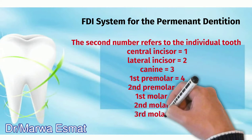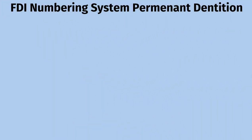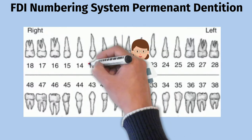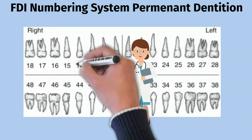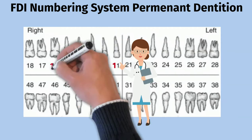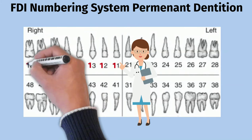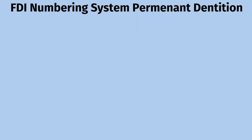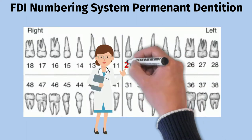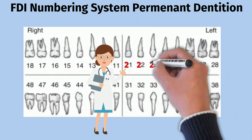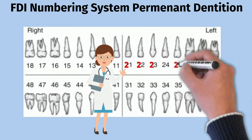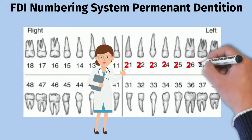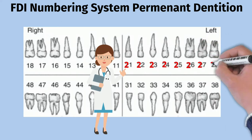So from 1 to 8. The upper right quadrant is represented by number 1. For example, 1-1 is the upper right central incisor, and 1-4 represents the upper right first premolar. For the upper left quadrant, we use first digit number 2. So 2-1 is the upper left central incisor, and 2-7 is the upper left second molar.